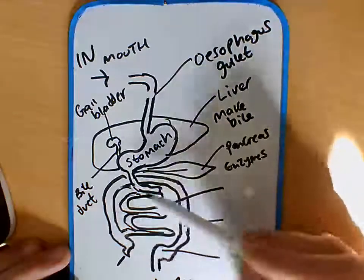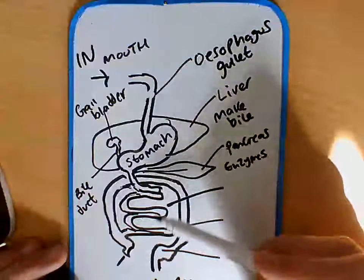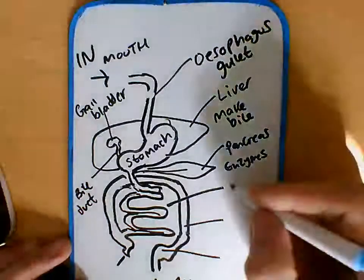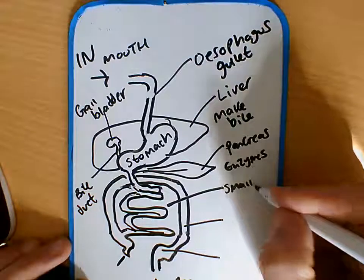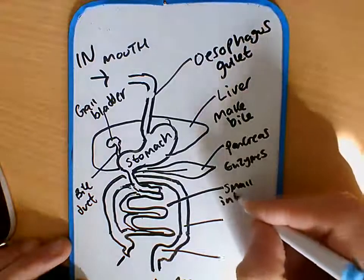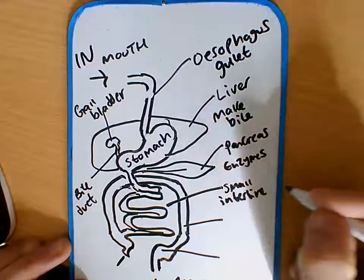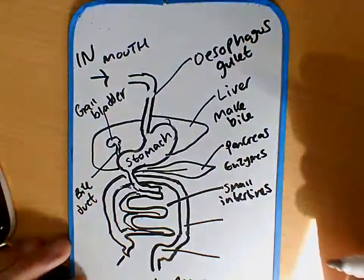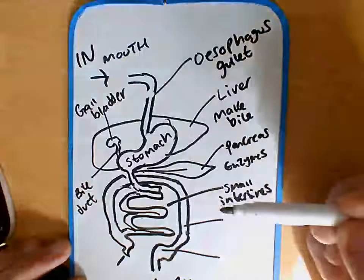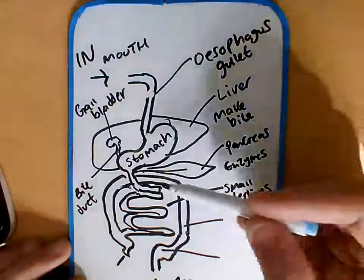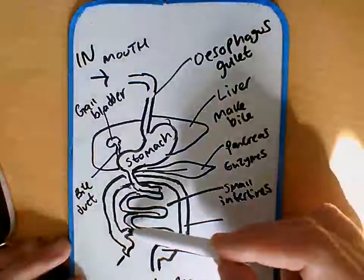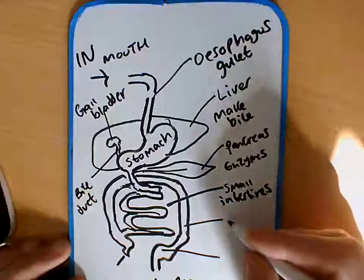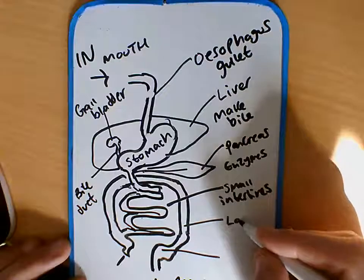This inner tube, which is much smaller in diameter, is the small intestine. The small intestine's job is really to absorb nutrients — by now all the molecules are small enough to be absorbed. It's then passed on to the outer layer here, which is called the large intestine.